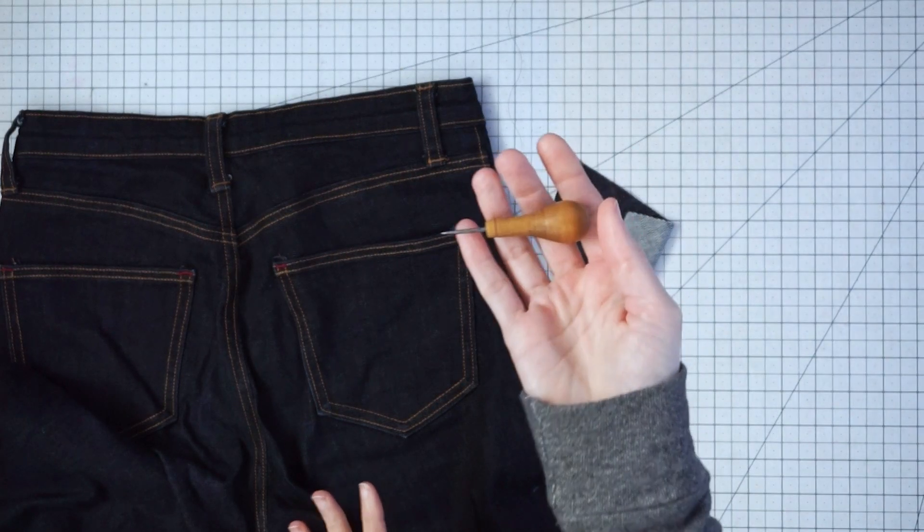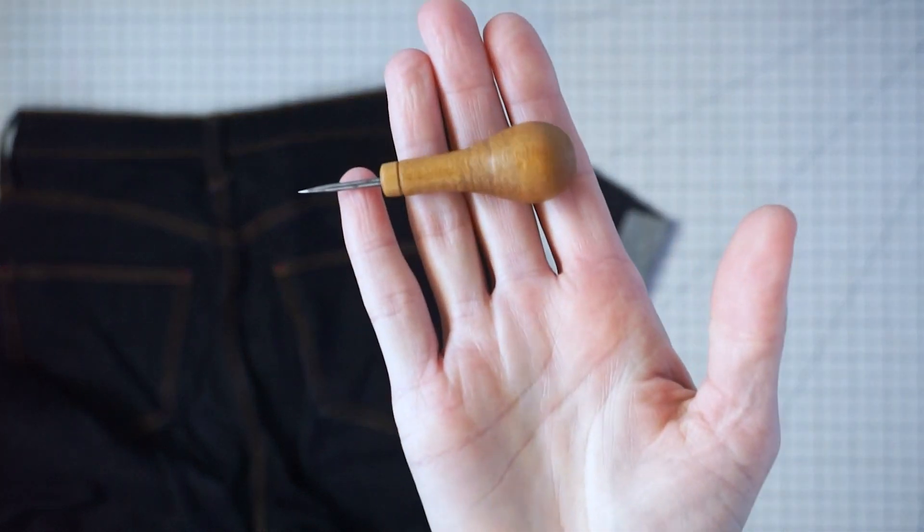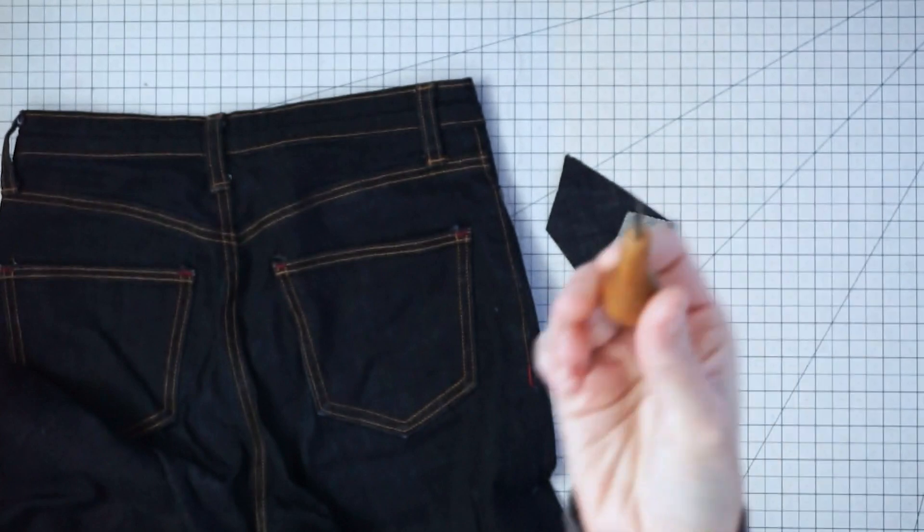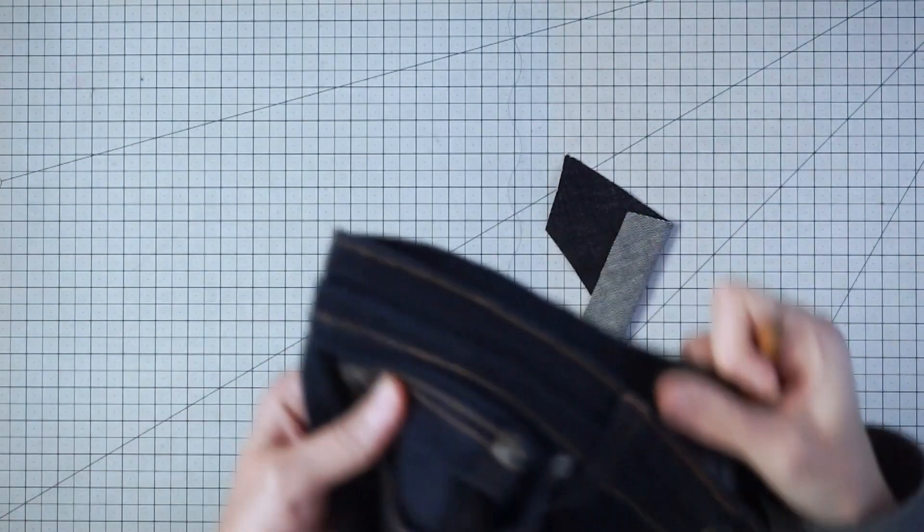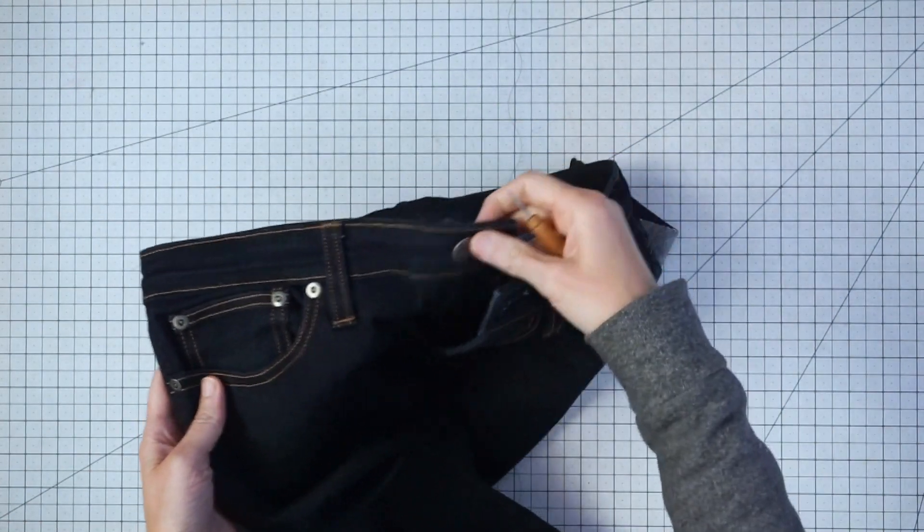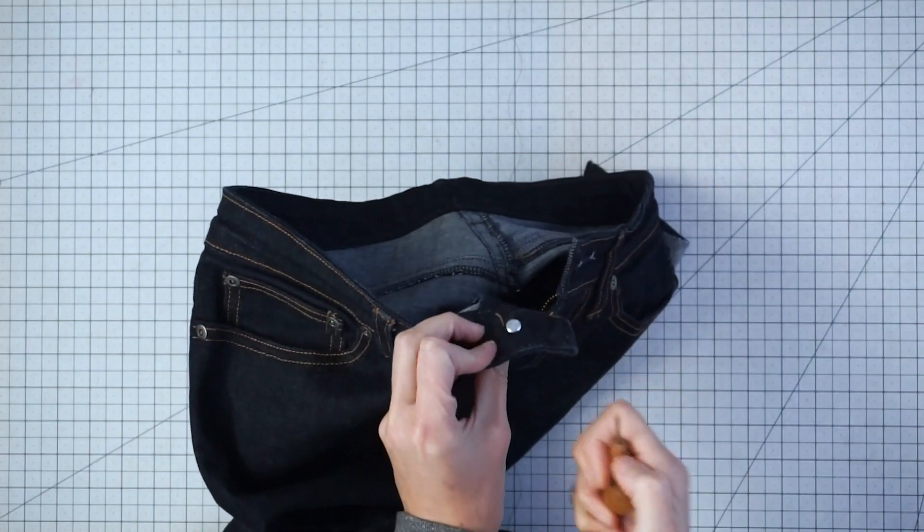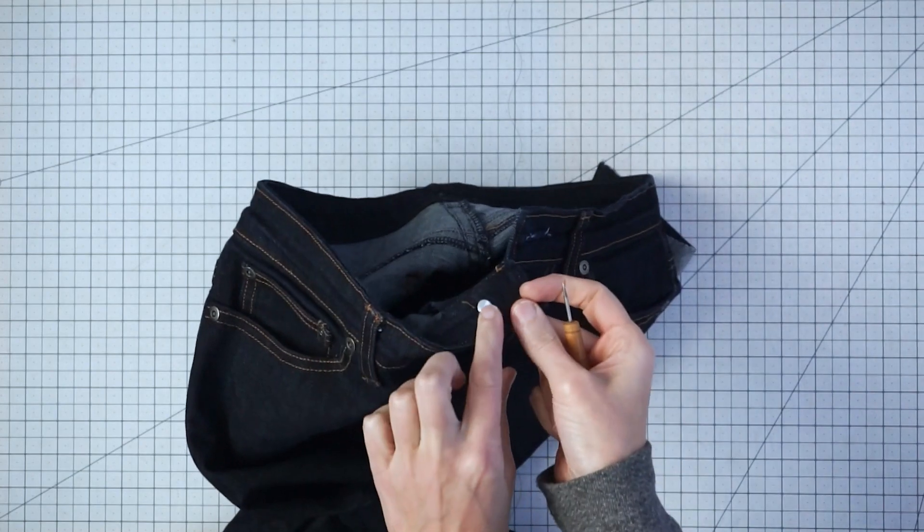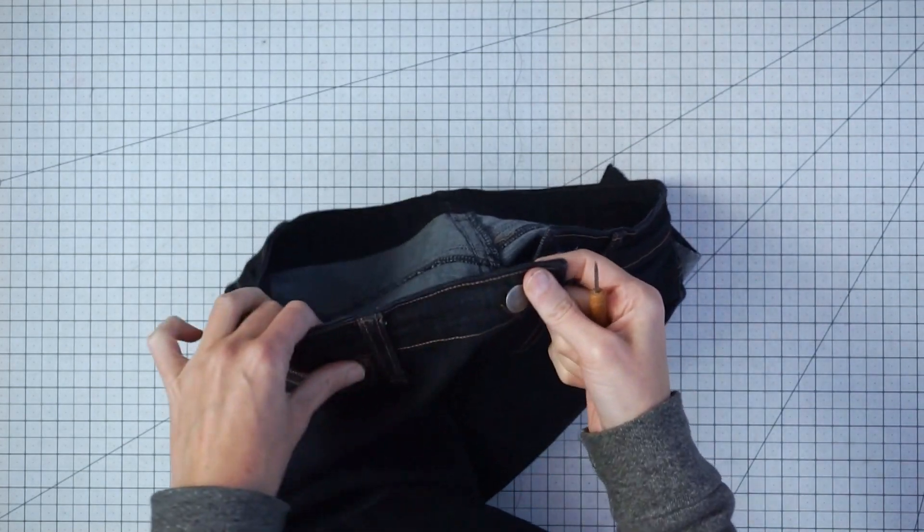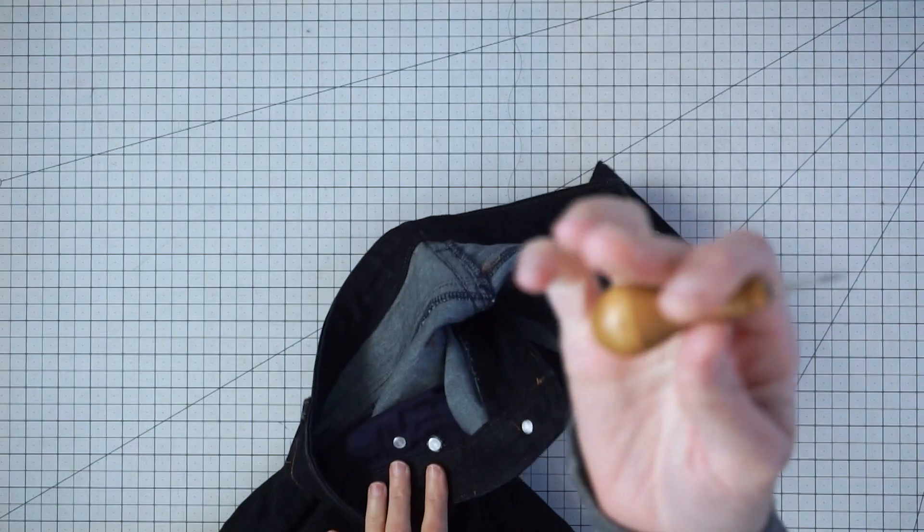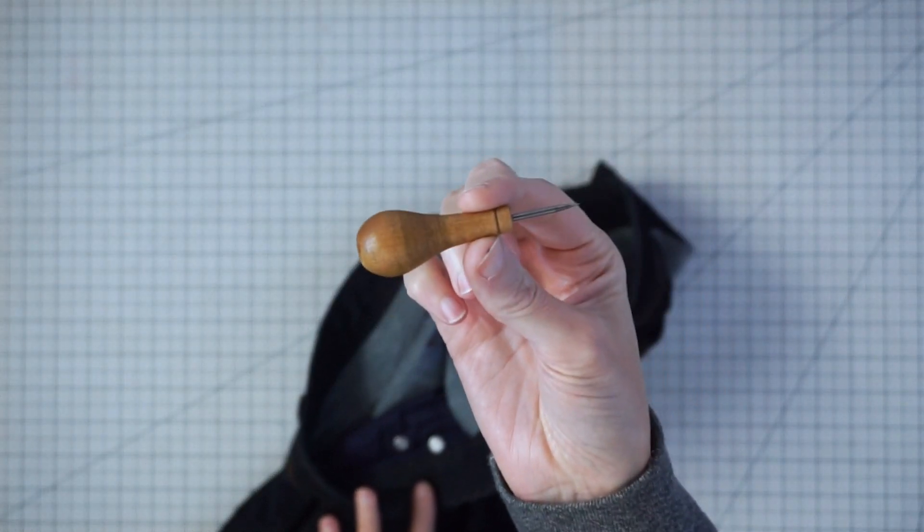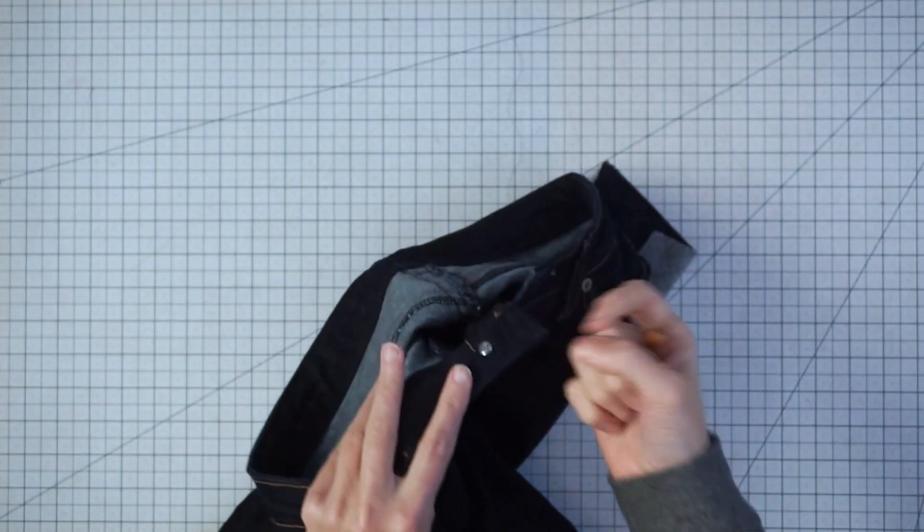Another tool that's going to be really helpful for you is an awl. This is just a thing that's going to poke holes. You use this when you are installing your rivets and your jeans button. You just poke a hole through your fabric, and then you can put the little post from the button or the rivet through that hole. If you don't have an awl, you can also use a nail and a hammer and just hammer that nail through your fabric and poke the hole.